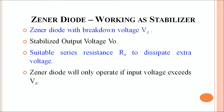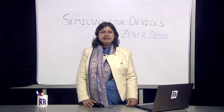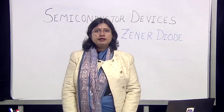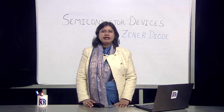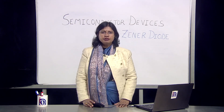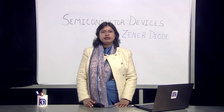A suitable series resistance RS is used to dissipate any extra voltage in the circuit. The Zener diode will only operate as a regulator when the input voltage exceeds Vz. Below the breakdown voltage, the Zener diode acts like an ordinary diode. The power dissipation of the Zener diode is given as the breakdown voltage multiplied by the current. The application as a voltage regulator is only valid when the Zener diode is connected in reverse bias and supplied with voltage beyond Vz.